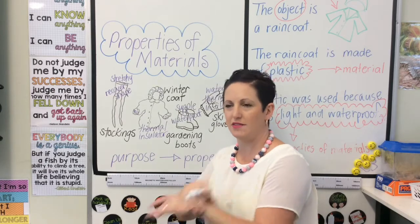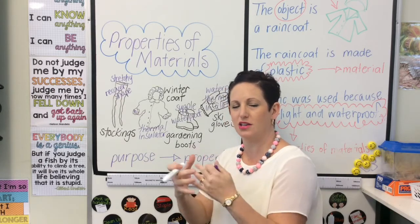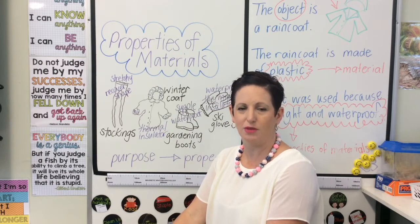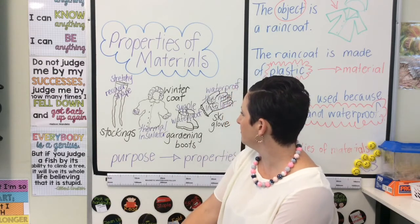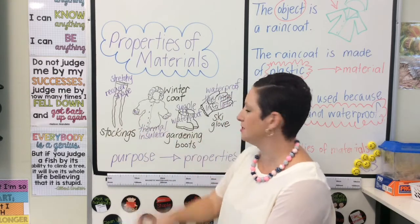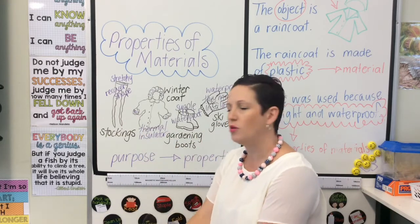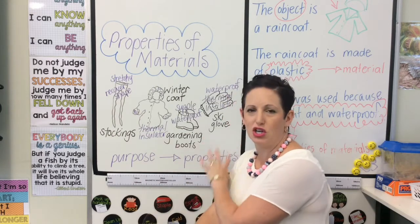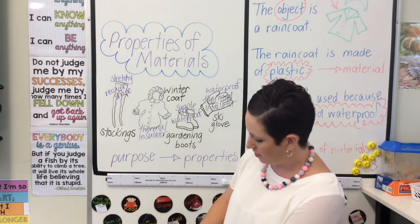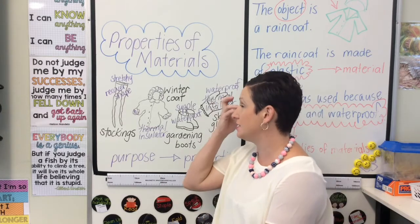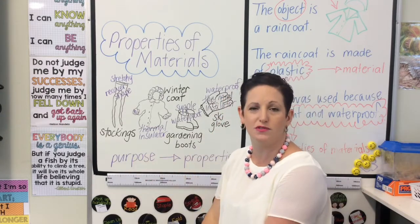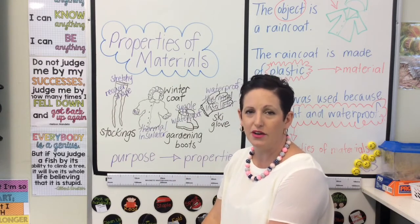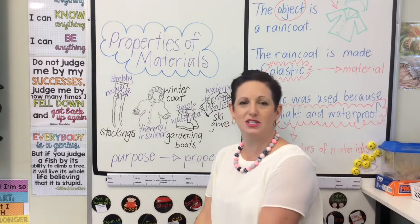You might have some kind of plastic material on the outside of the glove and a lovely warm wool on the inside that will keep your hands dry and warm. So the purpose of the object dictates what materials are chosen, and the materials are chosen because they have that certain property. Hopefully that helps you understand why we choose certain materials for certain jobs — because they all have their own properties. Thank you very much, bye!